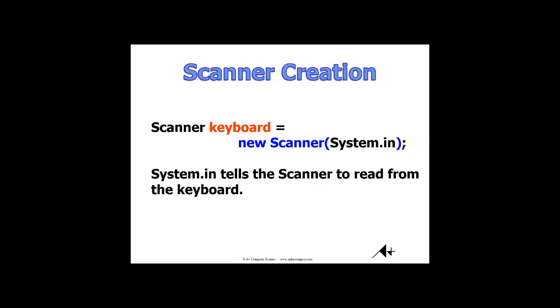Once again, whenever I create a scanner, I need to provide a reference, identifier, or variable name, and then I have to instantiate a scanner object and provide a parameter that tells me what it's connecting to, what it's processing. In this case, System.in means I'm processing values from the keyboard.